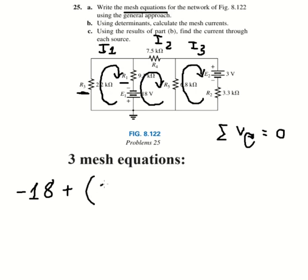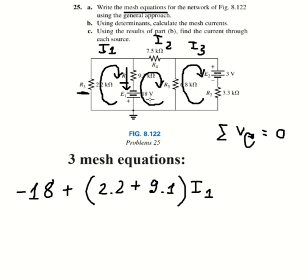So that means we have 2.2 plus 9.1. We can see that I number one flows in this direction, but I number two flows in the opposite direction, so we need to subtract 9.1 times I number two. That gives us the first mesh equation.